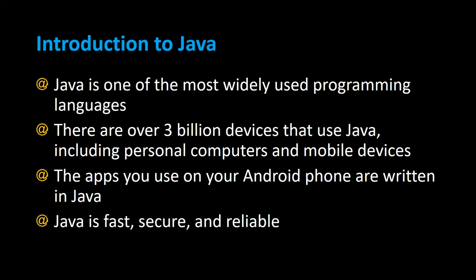Java is one of the most widely used programming languages used to create software, and there are over 3 billion devices that use Java, including personal computers and mobile devices. For example, all the apps on Android phones are written in Java. Java is fast, it's secure, and it's reliable, and that's why it's the most popular programming language used today.